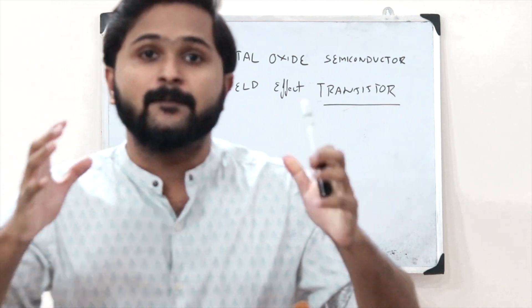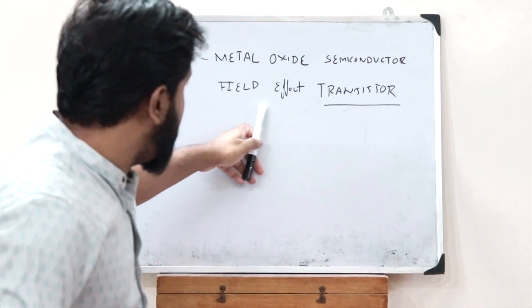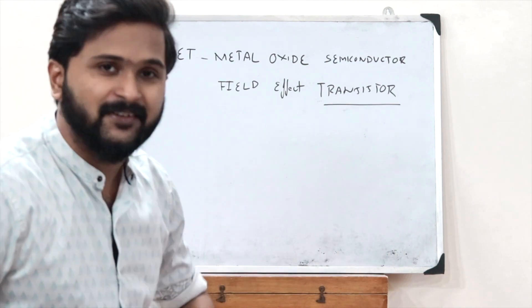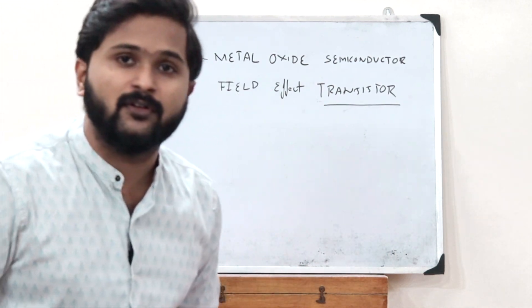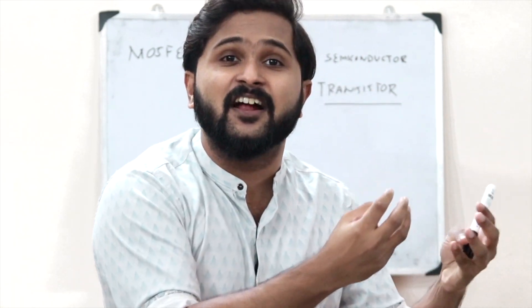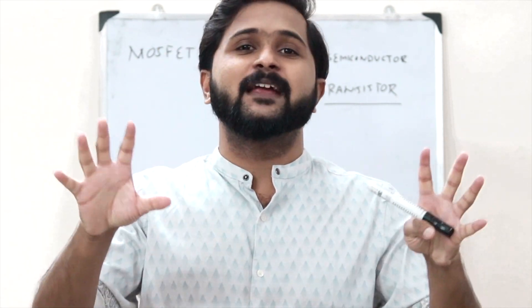In the previous video we saw what a BJT, or Bipolar Junction Transistor, was. We saw the structure of a power BJT and also recollected the structure of a normal BJT. Similarly, a MOSFET is also a type of transistor, but here it is a field effect transistor — more specifically, a Metal Oxide Semiconductor Field Effect Transistor. The main difference is that a power BJT is a current controlled device whereas a power MOSFET is a voltage controlled device.